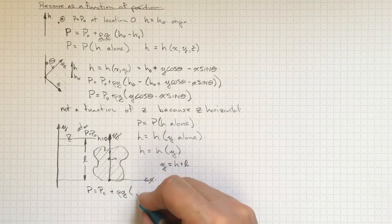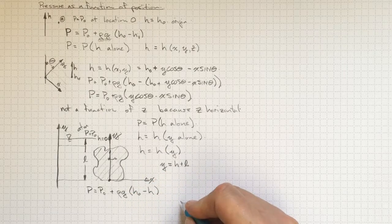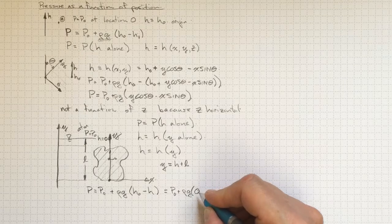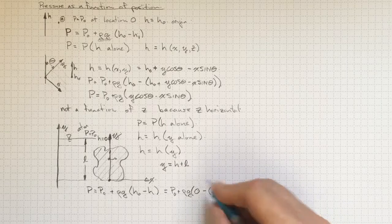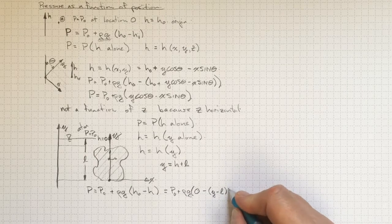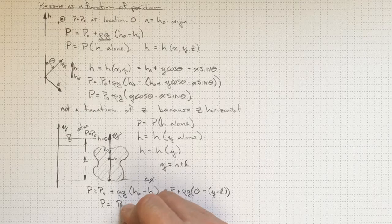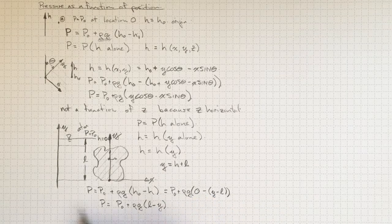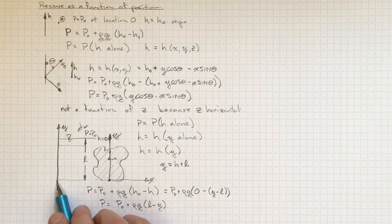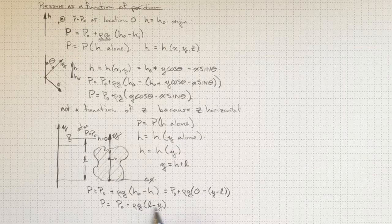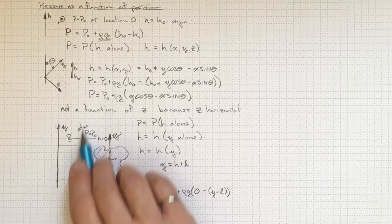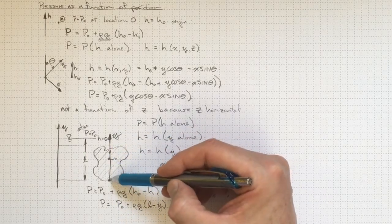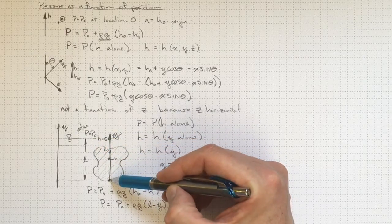So our pressure will be p0 plus rho g times h0 minus h. That will be equal to p0 plus rho g times 0, because h0 is 0, minus h, which is y minus l. Or p is equal to p0 plus rho g times l minus y. So now we have that pressure as a function of our y dimension. And the pressure is going down as y goes up. That makes sense. It's got a rho g times y in it, and that makes sense, because h and y are changing together. It's got an offset of l in it, and that makes sense, because the origin y is l below the surface there.